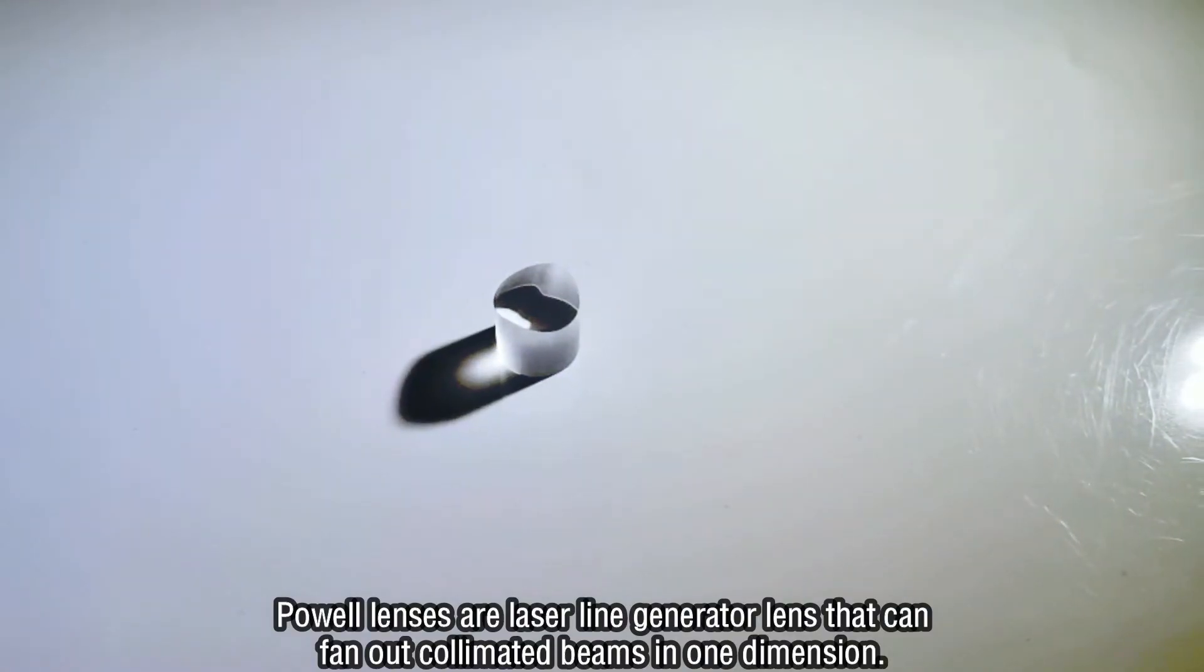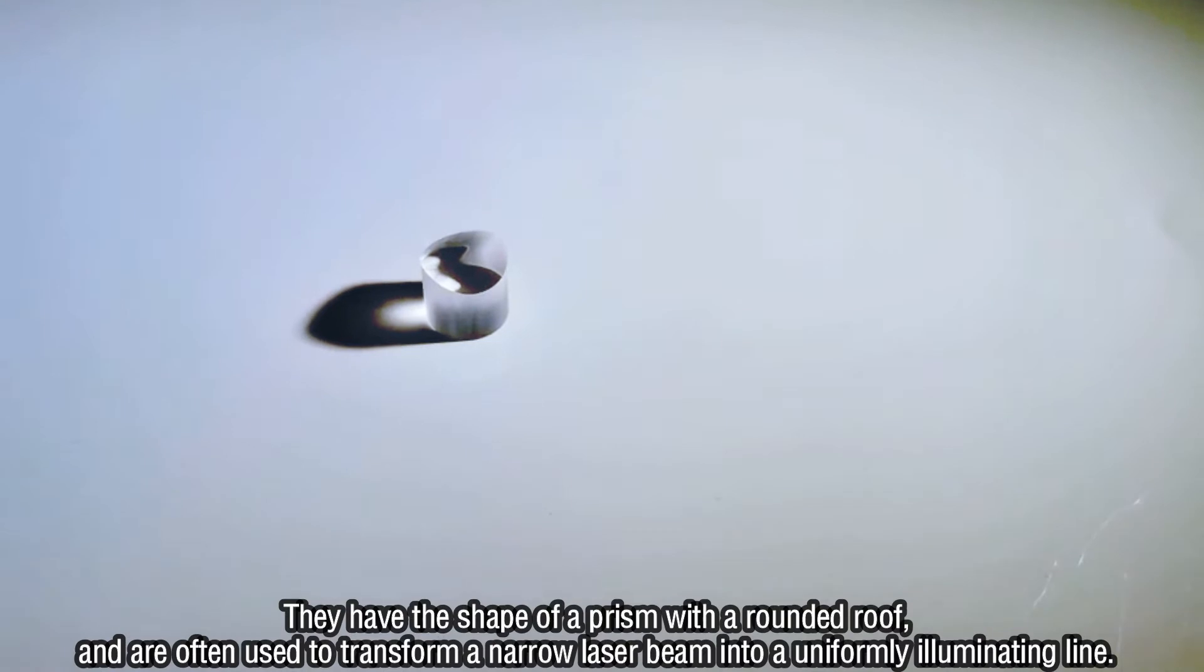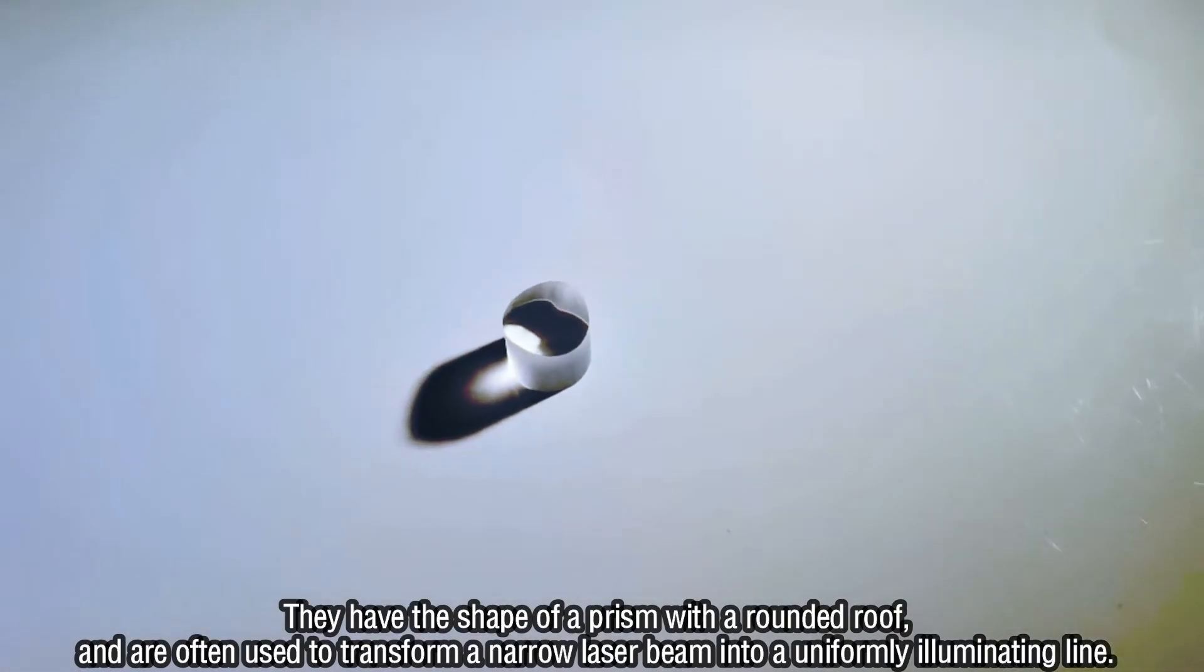Powell lenses are laser line generator lenses that can fan out collimated beams in one dimension. They have the shape of a prism with a rounded roof and are often used to transform a narrow laser beam into a uniformly illuminating line.